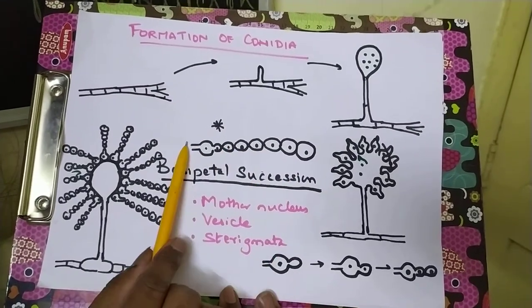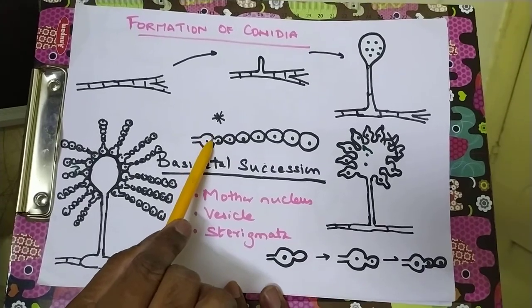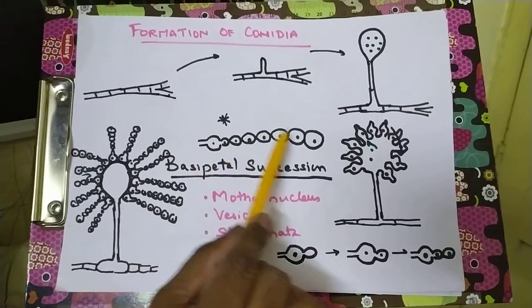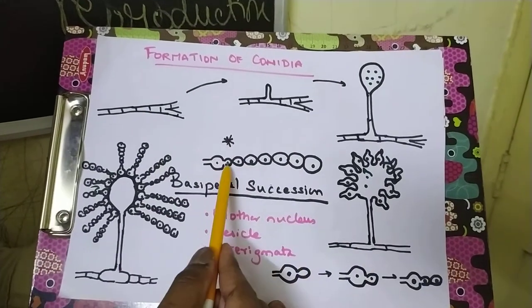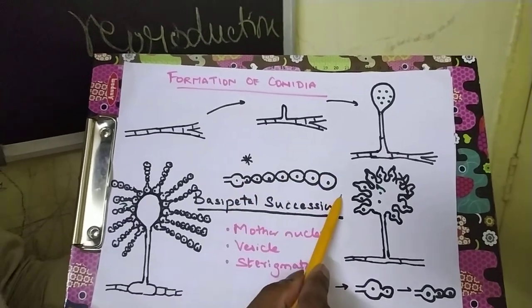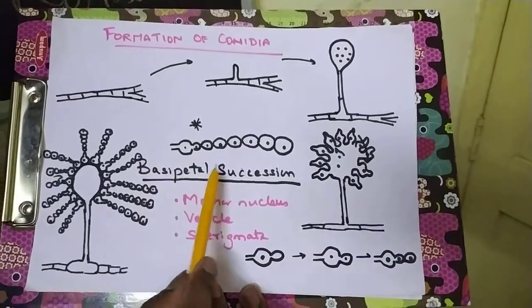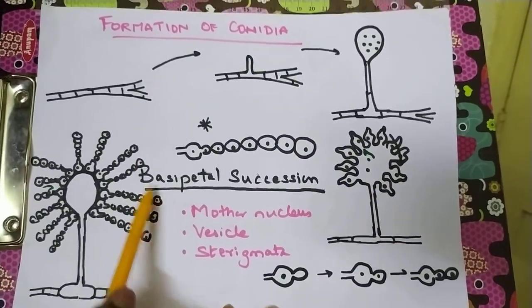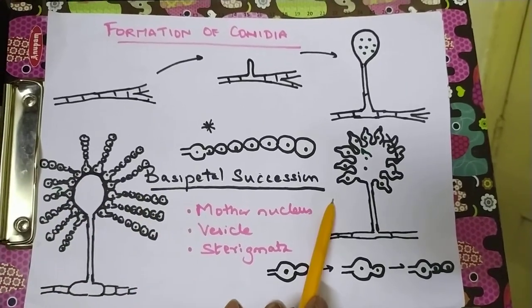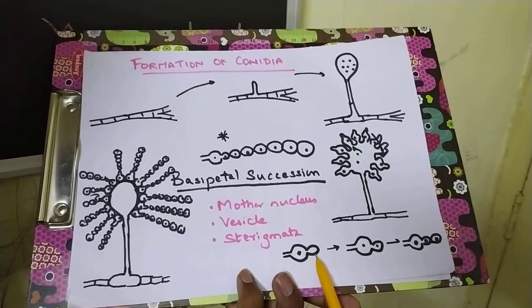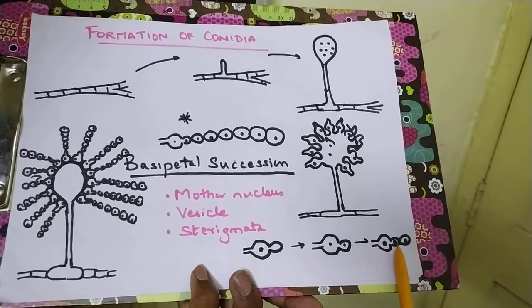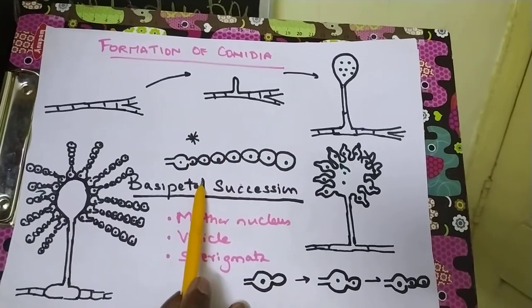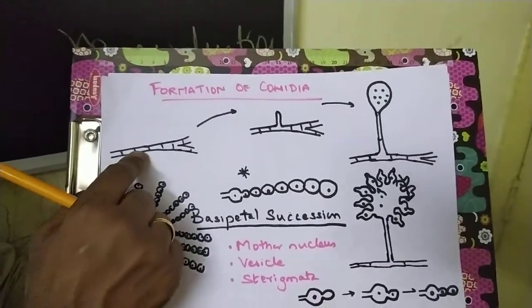In basipetal succession, the bottle-shaped sterigmata contain the mother nucleus, which produces new conidia by protoplast extension and mitotic division — so all conidia are 2n. It keeps replicating and giving the new protoplast extension, which is why the youngest conidia are at the base and the oldest are at the tip. Each conidium gets dispersed by air current and germinates like a seed, giving rise to a new mycelium.